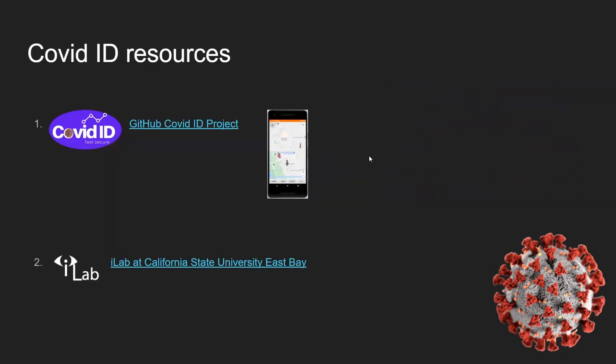Thank you for listening to this presentation. If you'd like to learn more, you can drop by the COVID-ID GitHub repository, where you can see all the code as it's open source, to see exactly how all of these modules function. Additionally, you can check out all the other work being put out of iLab at California State University East Bay by visiting the provided link. This project was brought to you by iLab at CSU East Bay, and we thank you for taking the time to learn about the work we're doing.